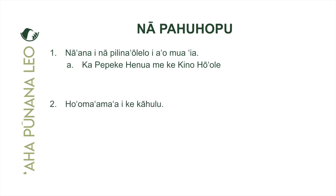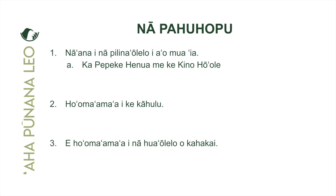Maika'i, helu e lua — we're going to ho'oma'ama'a, continuing to practice using the kahulu and being able to identify it and where its proper place is in the structure. Helu e kolu: our last goal for this evening is to ho'oma'ama'a in the hua'olelo o kahakai. We're going to practice our vocabulary words that pertain to the beach, so when we go to the kahakai, we have access to words to describe things usually found at the beach.